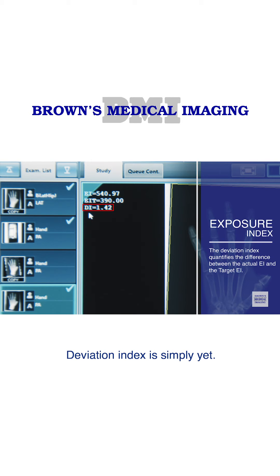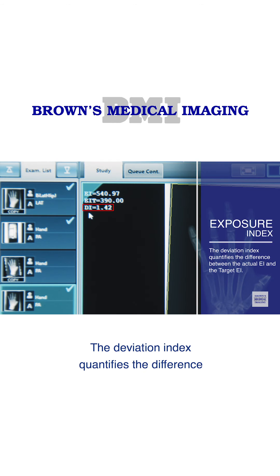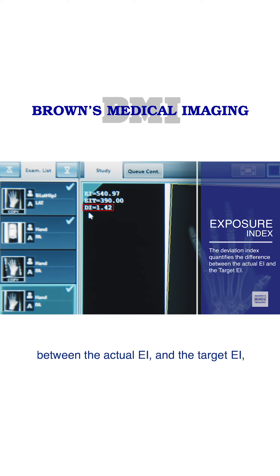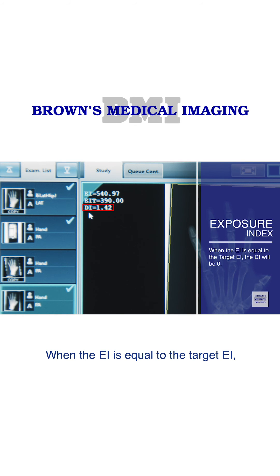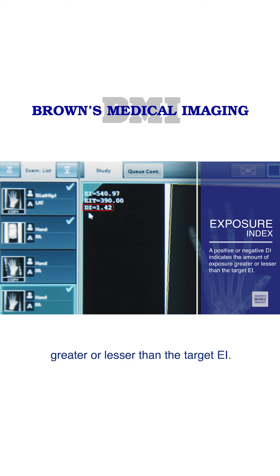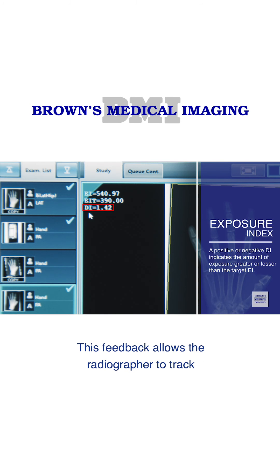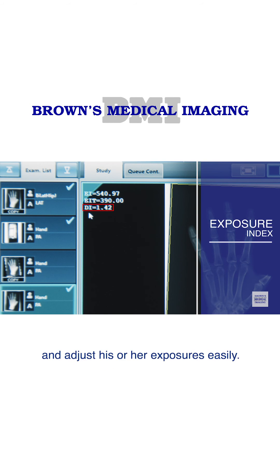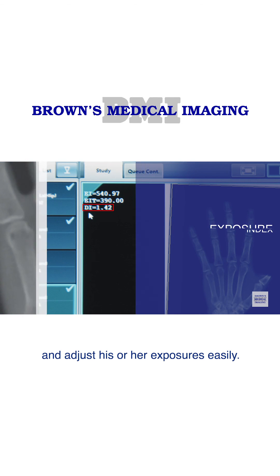Deviation index is simpler yet. The deviation index quantifies the difference between the actual EI and the target EI, and puts that value on a scale. When the EI is equal to the target EI, the DI will be zero. A positive or negative DI indicates the amount of exposure greater or lesser than the target EI. This feedback allows the radiographer to track and adjust his or her exposures easily.